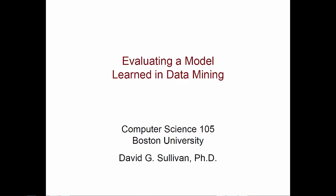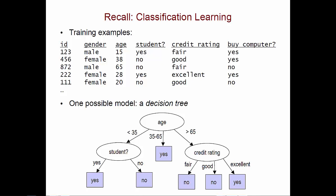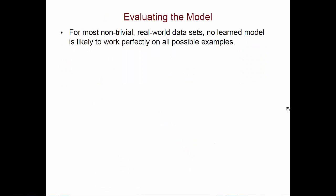In this video, we're going to see how we can evaluate a model that we've learned during data mining. In the previous video, we saw how we could use classification learning to take a set of training examples about customers and learn a model like a decision tree that predicts how likely it is that a given customer will buy a computer in the next year. We talked about how this model works and how it makes predictions for customers we haven't seen before. The question is, how good are these predictions?